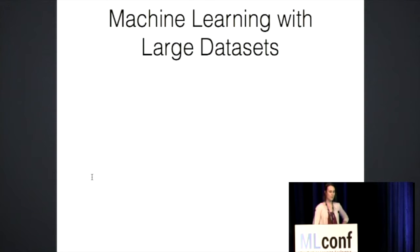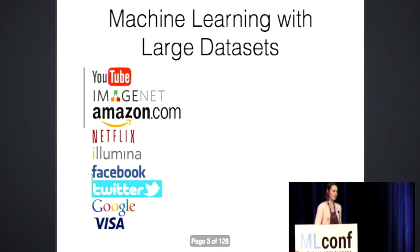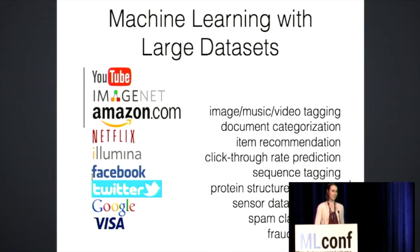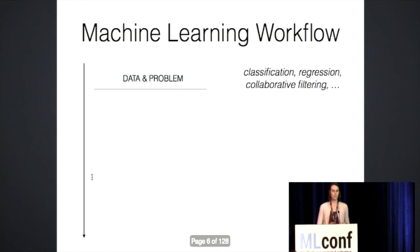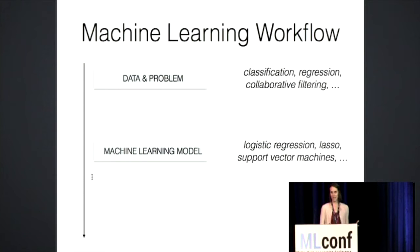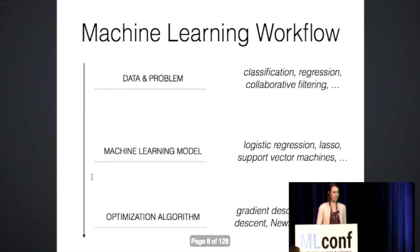What's the motivation for this work? There are many people, like you all I imagine, that are trying to solve machine learning problems with very large data sets. So how does this actually work in practice? You start with your data set and a problem that you'd like to solve, for example classification. Beyond that, as we've heard a lot about today, you have to select the appropriate model to solve that problem, such as logistic regression. But under the hood, there's an optimization algorithm that you have to then select to fit that model to your data.